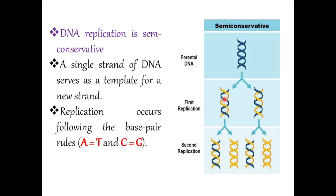A new strand is synthesized upon the existing strand, which serves as a template, and it divides into two. Replication occurs following the base-pairing rule: adenine pairs with thymine, cytosine pairs with guanine. So it is very specific and follows these rules.